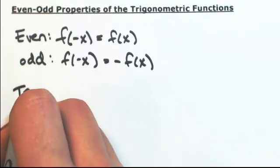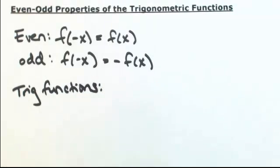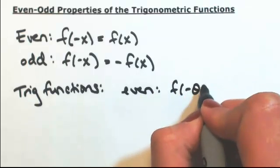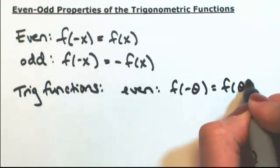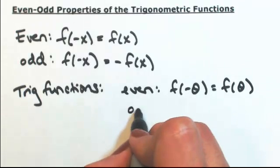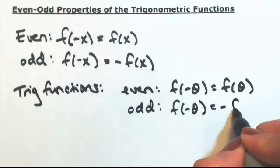For trig functions, the inputs are angles. If it's even, then f(-θ) will give you back what you started with: f(θ). For an odd function, if you put in a negative angle, it throws back out a negative output.